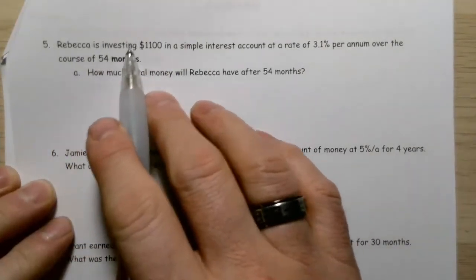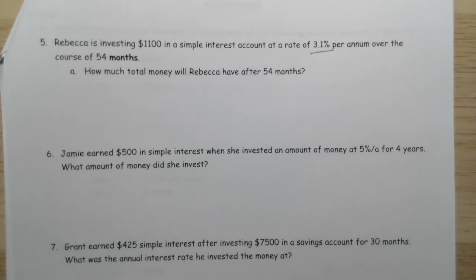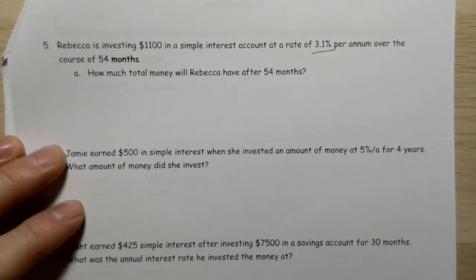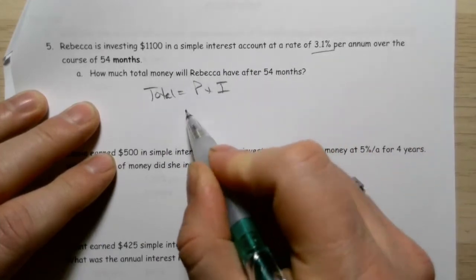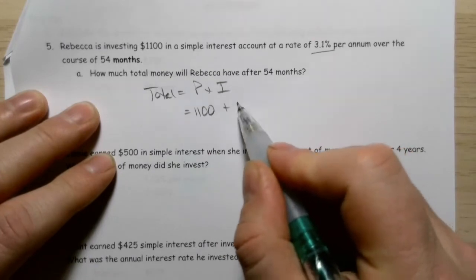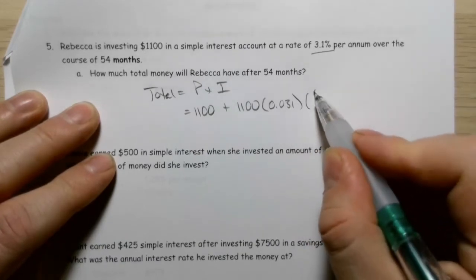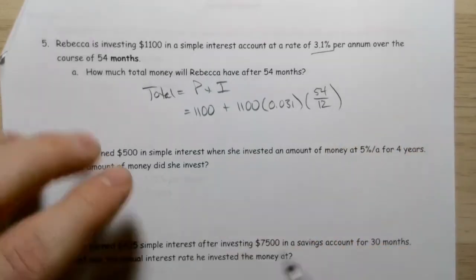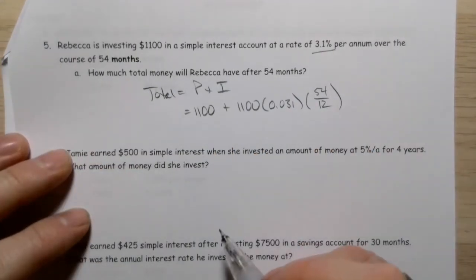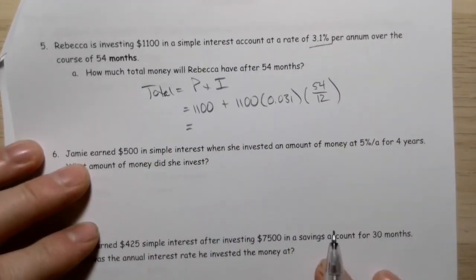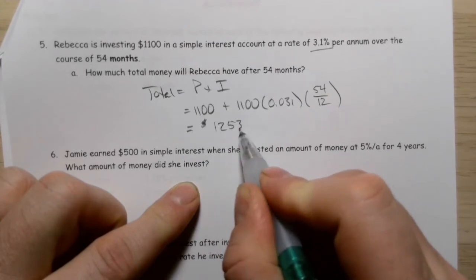Rebecca is investing $1,100 in a simple interest account at a rate of 3.1% per annum over 54 months. How much is she going to have total after those 54 months? In this case, I'll start with total equals P plus I. So this will be $1,100 plus the interest. My interest will be $1,100 multiplied by 0.031, multiplied by 54 over 12—converting the number of months into a fraction of a year. When I put that all together, you get $1,253.45.